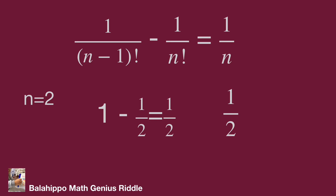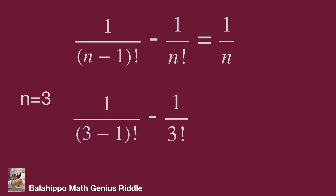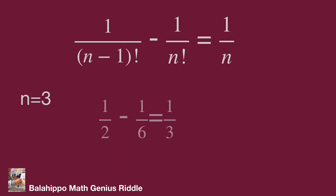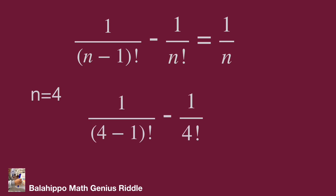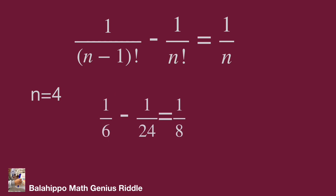How about n equals 3? The left side equals 1 over 2 factorial minus 1 over 3 factorial. Then check n equals 4: left side is 1 over (4 minus 1) factorial minus 1 over 4 factorial, equals 1 over 3 factorial minus 1 over 4 factorial, equals 1 over 6 minus 1 over 24, equals 1 over 8. The right side is 1 over 4, so n equals 4 is not a solution.